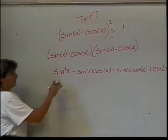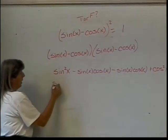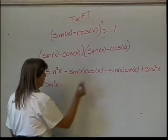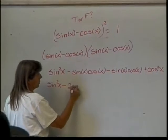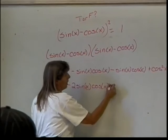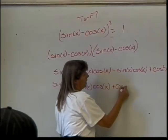So just to make it a little less messy, I have sine squared of x. I have two of these that are both negative, so minus 2 sine of x times the cosine of x. And then I have plus cosine squared of x.